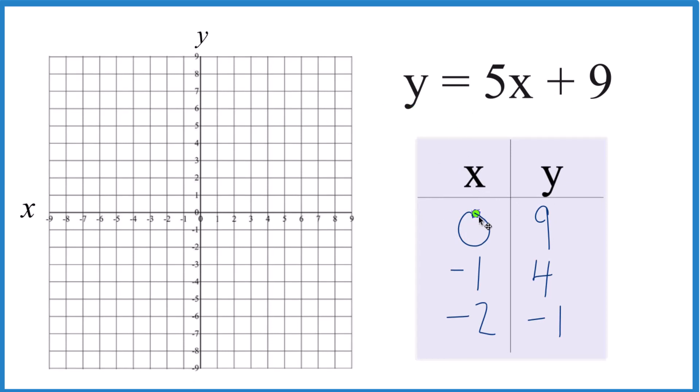So we have x is 0, y is 9, x is 0, y is 9, x is negative 1, and y is 4. We could stop with two points, but if you have three, you'll know you're right.